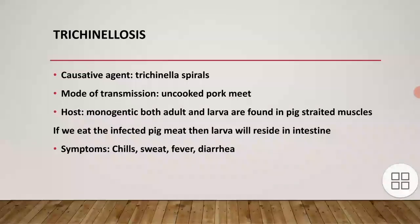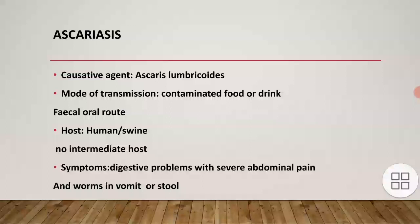Trichinellosis: the causative agent is Trichinella spiralis. Mode of transmission is through uncooked pork meat. The host is monogenetic — both adult and larvae are found in pig striated muscles. If we eat infected pig meat, the larvae reside in the intestine. Symptoms include chills, sweating, fever, and diarrhea.